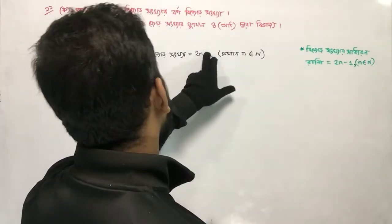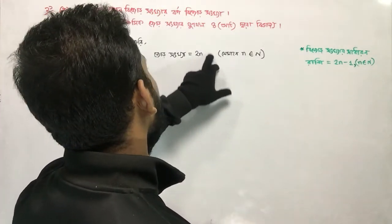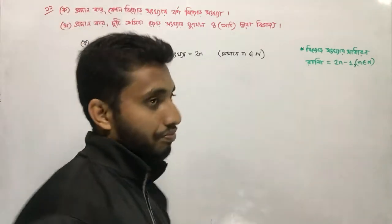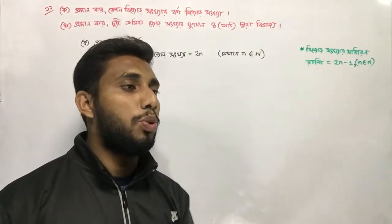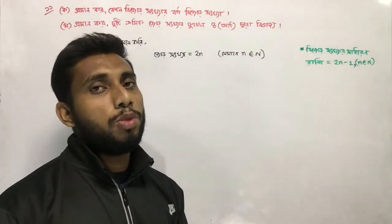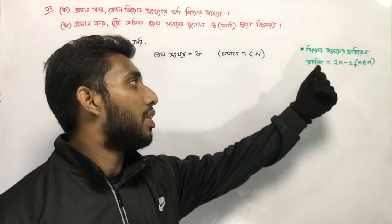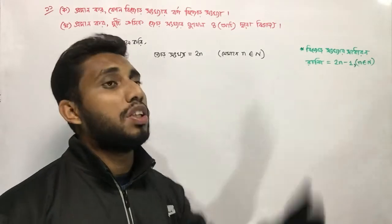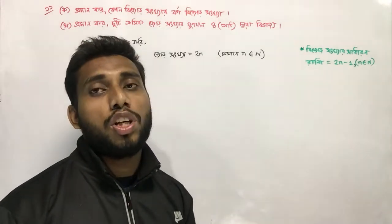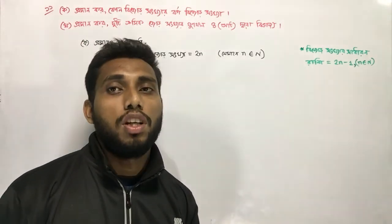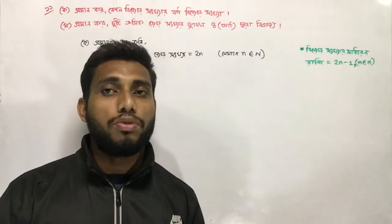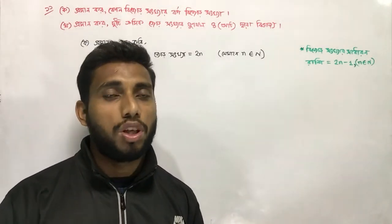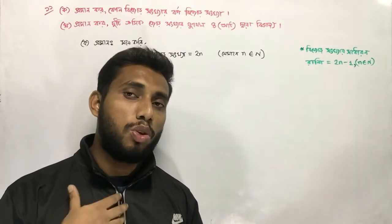The value is 2n. The value is 2n. Because the value is 2n. 2n is the result: 1, 2, 3, 4.